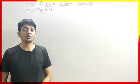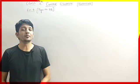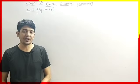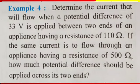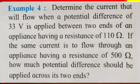Now we are going to solve the fourth problem from your textbook, which is given on page number 38. The fourth problem says: determine the current that will flow when a potential difference of 33 volt is applied between the two ends of an appliance having a resistance of 110 ohm.